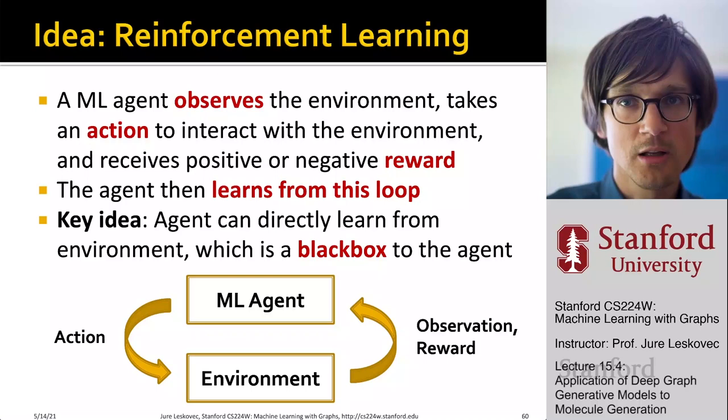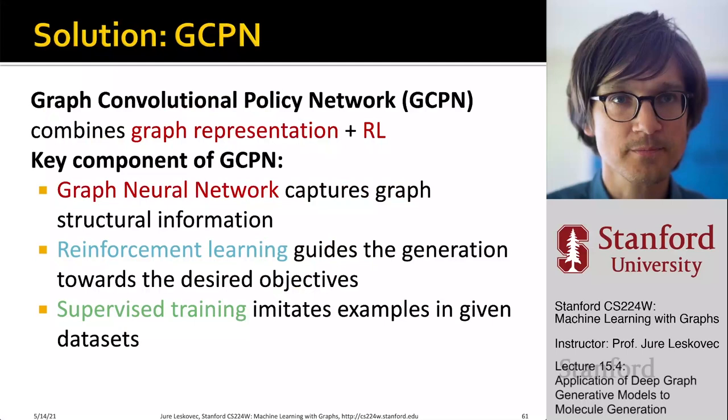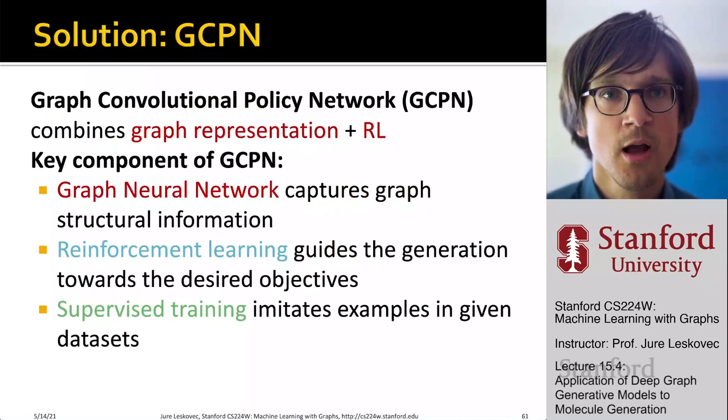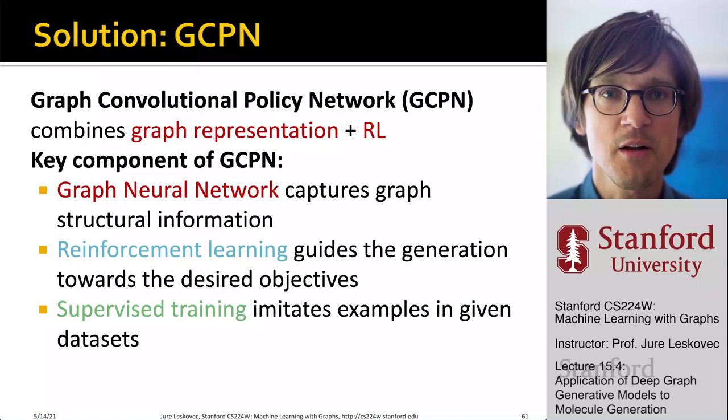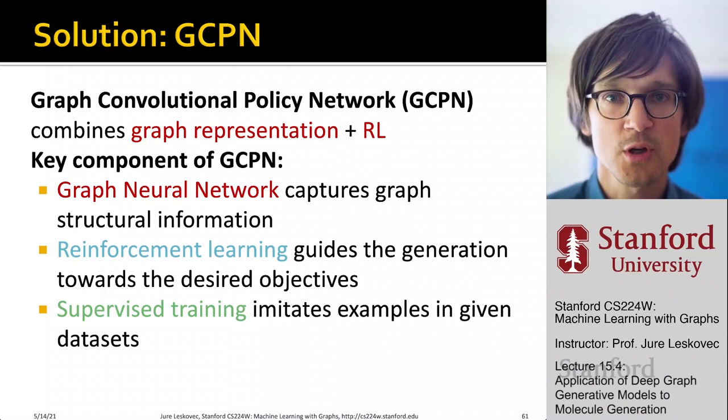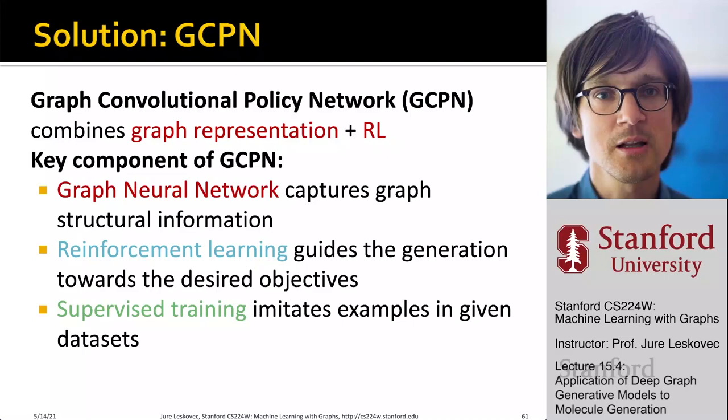The solution to this goal-directed molecule generation is called a Graph Convolutional Policy Network, which combines graph representation and reinforcement learning. The key components of GCPN are: we use a graph neural network to capture graph structure information, we use reinforcement learning to guide generation towards the desired objective, and we use supervised learning to imitate examples on a given training dataset so our molecules look realistic.